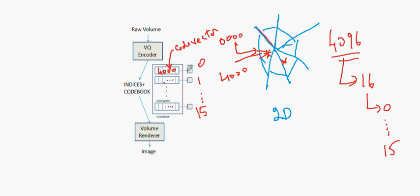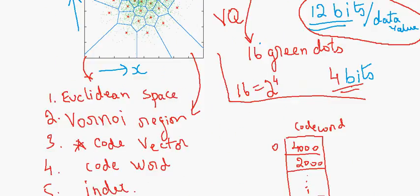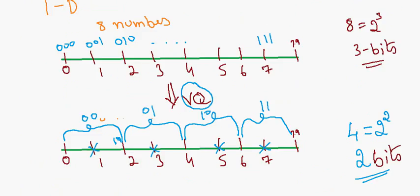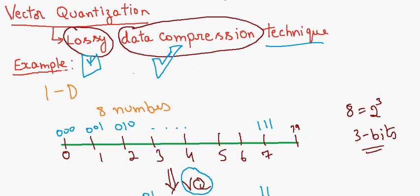So index is 0, 1 till 15 and this is the real value of red dot. So basically after compression we get code vectors, indices, and this is the code book. And using this code book and indices we decompress the data and get the data back. That's basically in the volume rendering part. I hope the vector quantization concept is clear because we just basically want to know what vector quantization is.